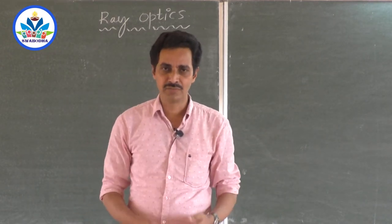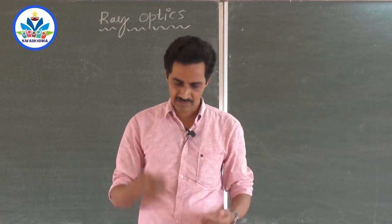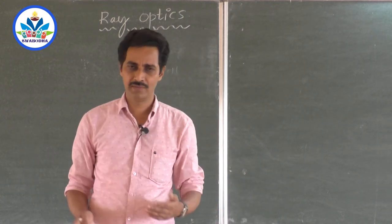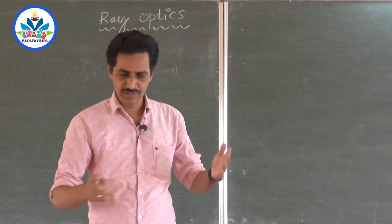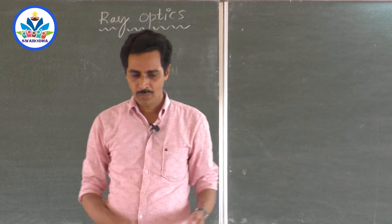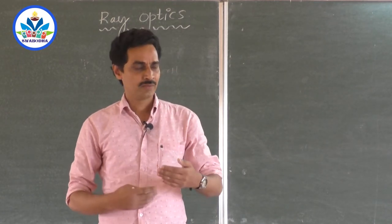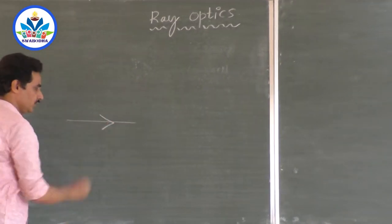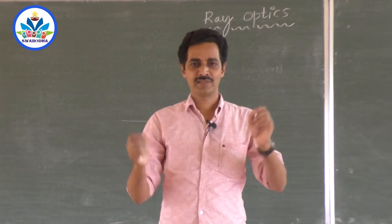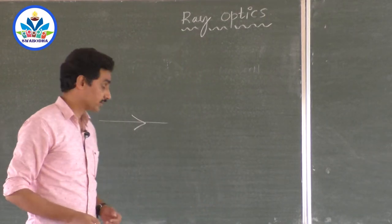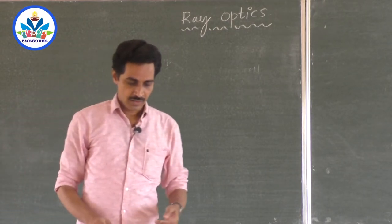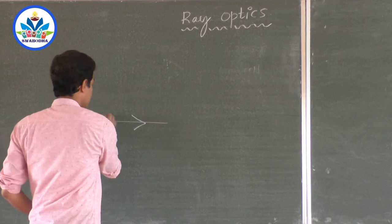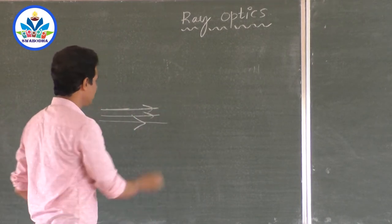The study of light is very important — without light, nothing can survive. Light is studied under different aspects: its nature, phenomena, and characteristics. One part is ray optics. A ray is a conventional way of representing light in a diagram — represented by a straight line with an arrow. A collection of rays is called a beam, like the light coming from a torchlight.